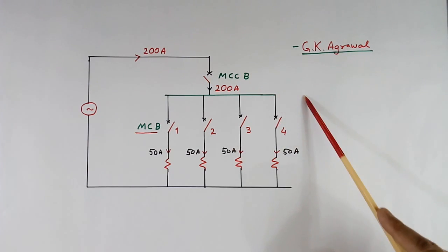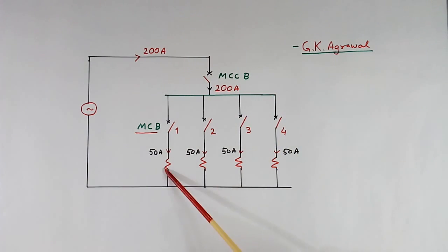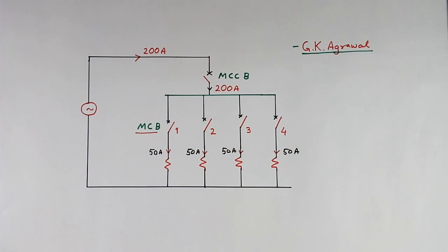But suppose a fault happens here. Then this MCCB will trip, and all loads will be affected. So that way we distribute MCB and MCCB. Today we will close here.